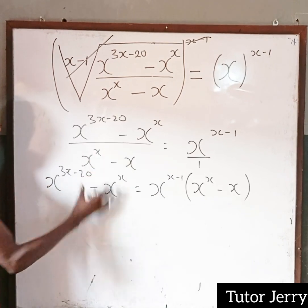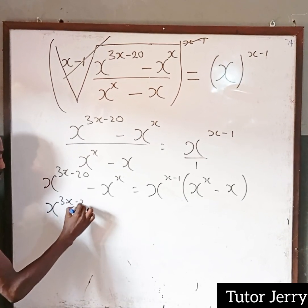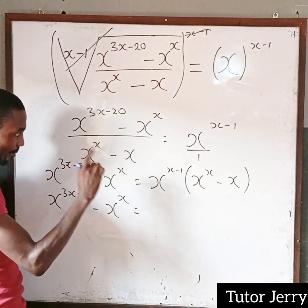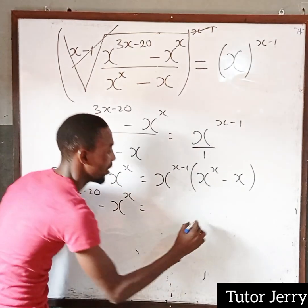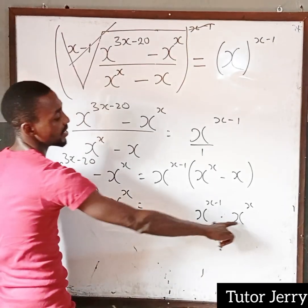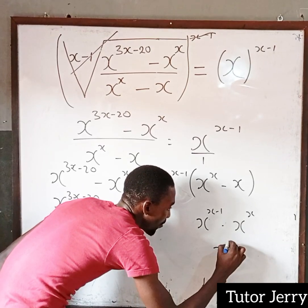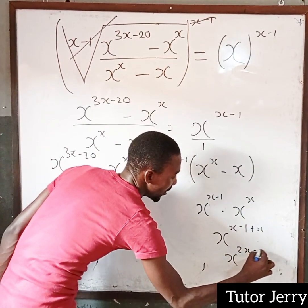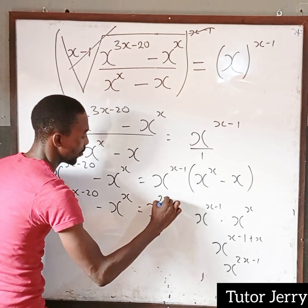After cross multiplying, we get x to the power of 3x minus 20, which is equal to x to the power of x minus 1, times x to the power of x, minus x to the power of x. Now, x to the power of x minus 1, multiplied by x to the power of x — because they are the same base, from the law of indices, we add the powers together. So we get x to the power of x minus 1 plus x, which gives us x to the power of 2x minus 1.